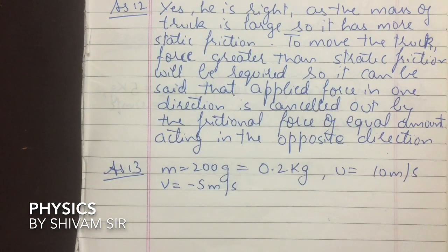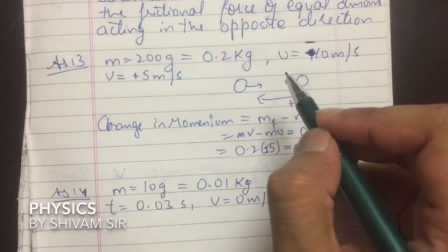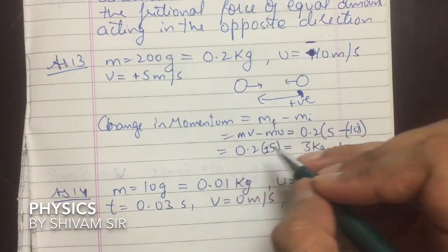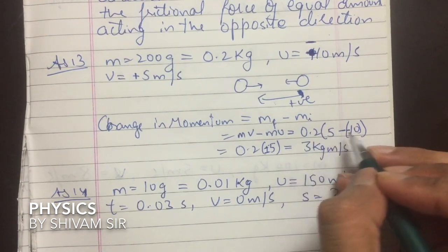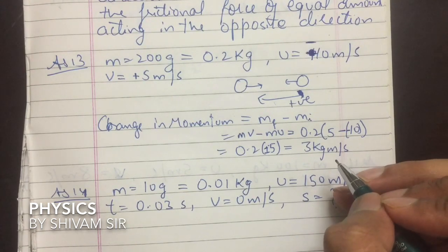Question 13: A hockey ball of mass 200 g (0.2 kg) traveling at 10 m/s is struck by a hockey stick to return along the same path at 5 m/s. Taking the original direction as negative, u = -10 m/s, v = +5 m/s. Change in momentum = m(v - u) = 0.2 × (5 - (-10)) = 0.2 × 15 = 3 kg m/s.